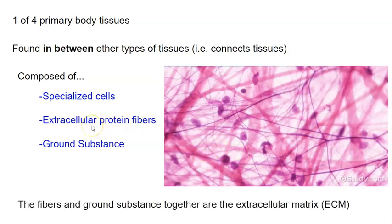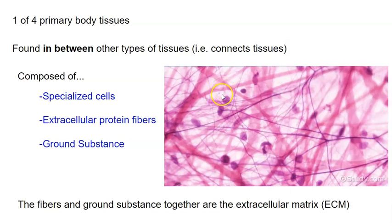We have these cells, and then we have things outside the cell. Things outside the cell are called the extracellular matrix, and that includes the fibers and the ground substance. So the ground substance and the fibers together are called the extracellular matrix.